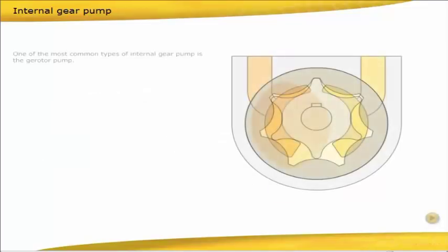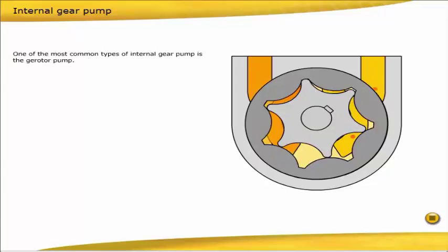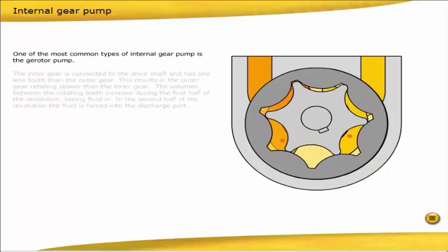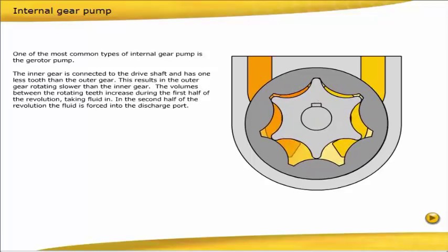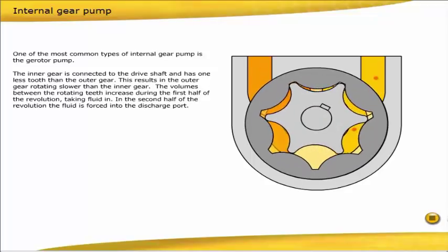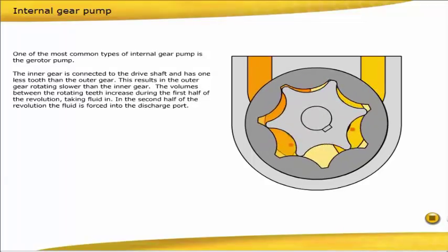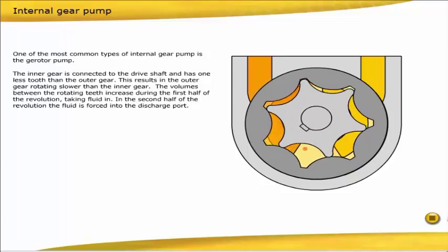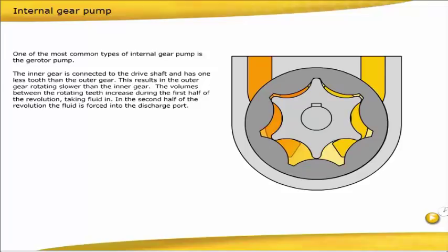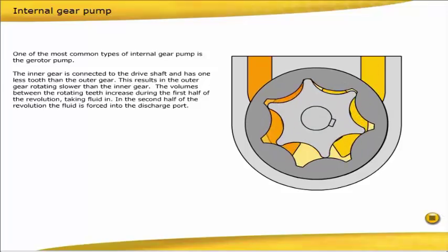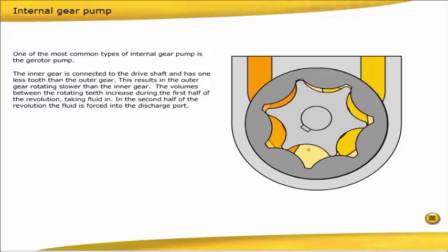One of the most common types of internal gear pump is the gerotor pump. The inner gear is connected to the drive shaft and has one less tooth than the outer gear. This results in the outer gear rotating slower than the inner gear. The volumes between the rotating teeth increase during the first half of the revolution, taking fluid in. In the second half of the revolution, the fluid is forced into the discharge port.